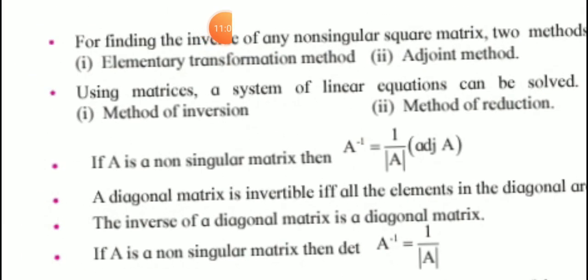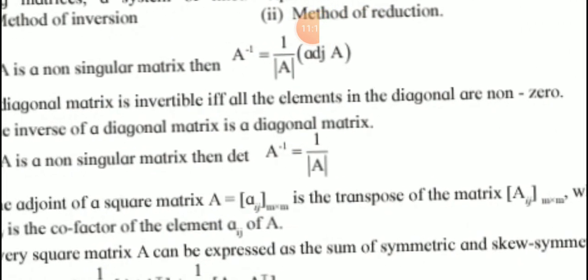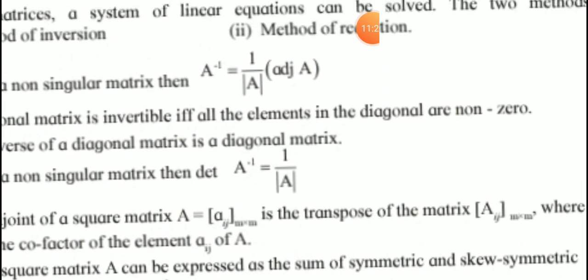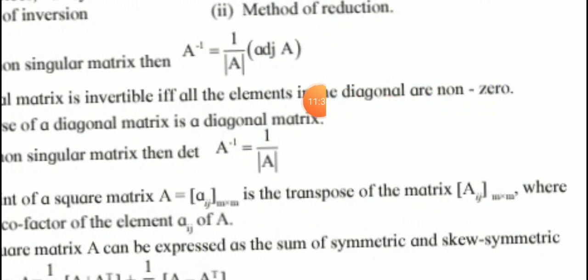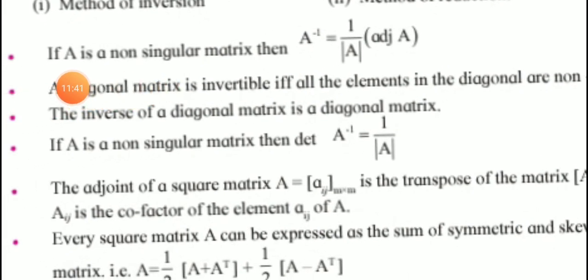Important conditions to remember: A diagonal matrix is invertible if and only if all elements in the diagonal are non-zero. When finding the inverse, all diagonal elements must be non-zero. The inverse of a diagonal matrix is also a diagonal matrix. If A is a non-singular matrix, then the determinant of the inverse matrix equals 1 over the determinant of A.